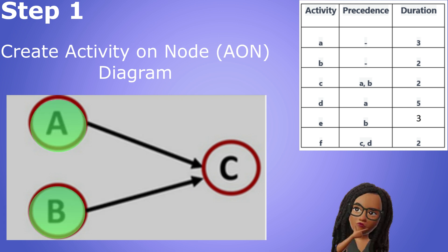Both A and B are known as predecessor activities of C because they proceed or come before C, and they must be complete before C can start.